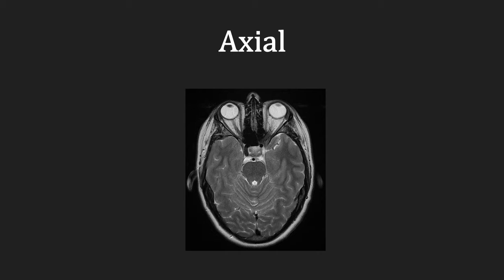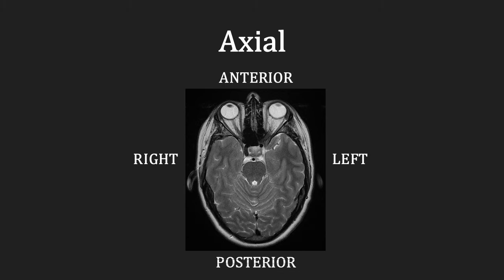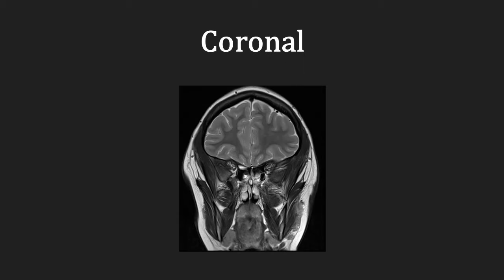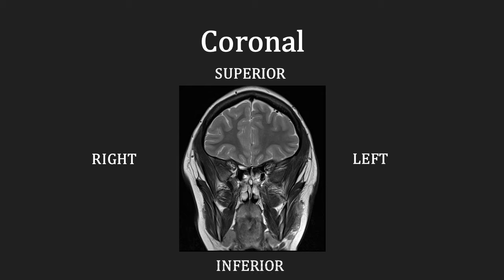On the axial plane, the right of the patient is on the left of the image, whilst the left of the patient is on the right of the image; anterior or the face is at the top, whilst the posterior is at the bottom. In the coronal plane, the right of the patient is again on the left of the image and the left of the patient is again on the right of the image. The superior or top of the head is at the top and the inferior or towards the neck is at the bottom.